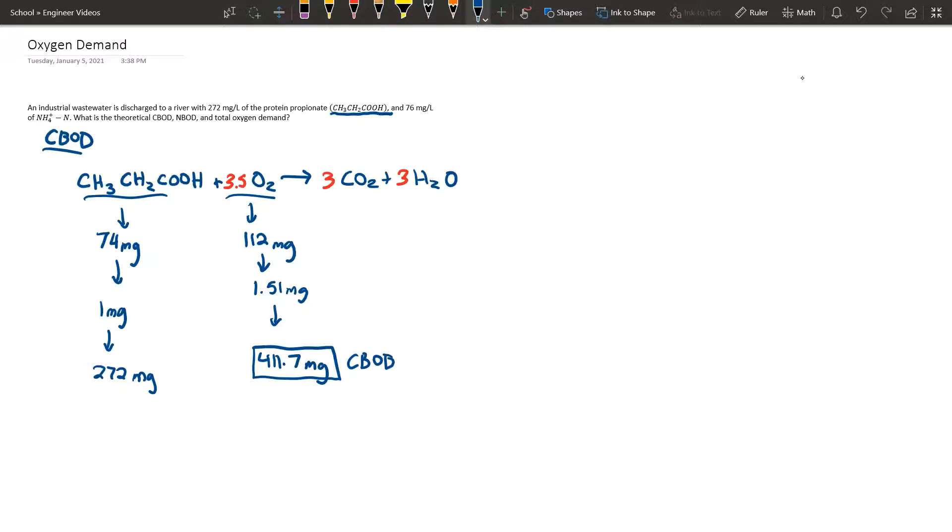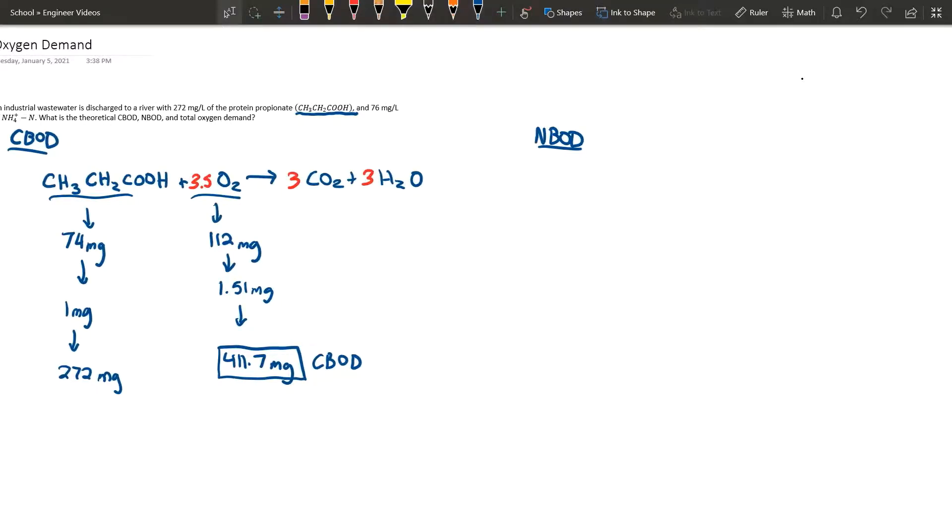Okay, now, actually, let me fix that. Make that a little nicer. CBOD. Okay, now we're going to start our NBOD. So we're going to write our formula for the NBOD. So we have NH4 as nitrogen plus the oxygen yields our nitrate, hydrogen ion, and water.